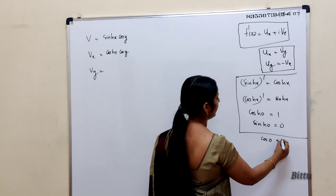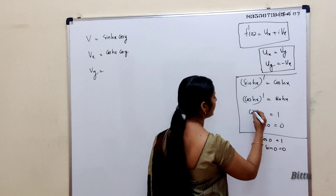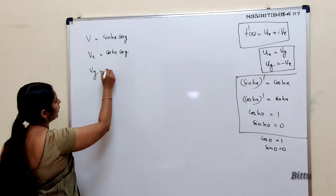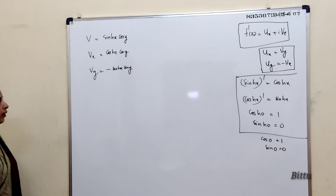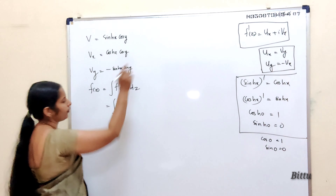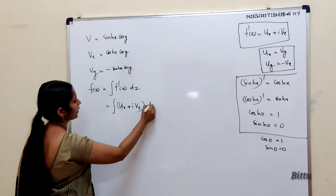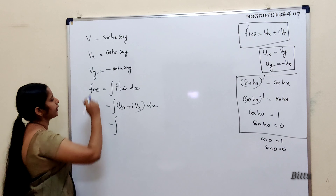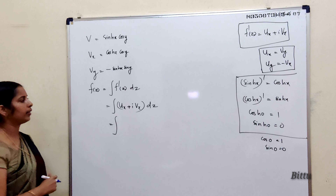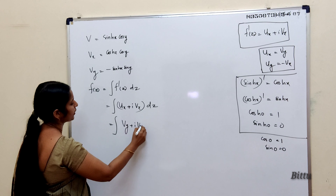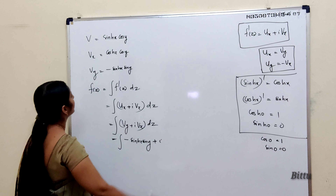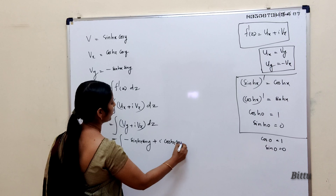Note that cos(0) = 1 and sinh(0) = 0 — similar results for cosh(0) and sinh(0). So ∂v/∂x = cosh(x)cos(y) and ∂v/∂y = −sinh(x)sin(y). To find f(z), integrate f'(z) = u_x + i·v_x. Since v is given, replace u_x using the Cauchy-Riemann equations: u_x = v_y. So f'(z) = v_y + i·v_x = −sinh(x)sin(y) + i·cosh(x)cos(y).